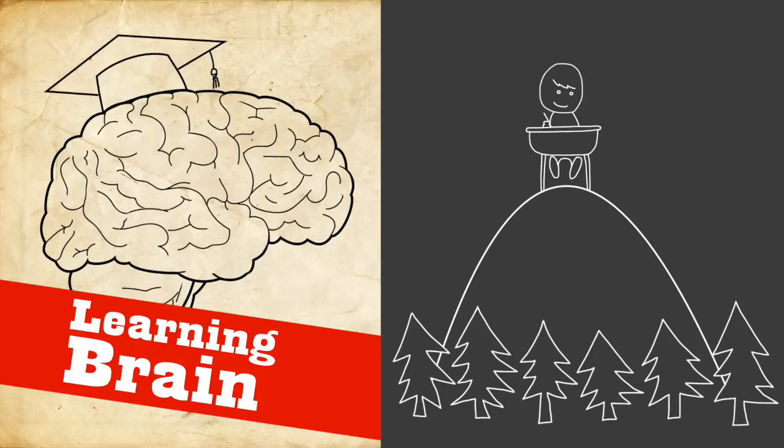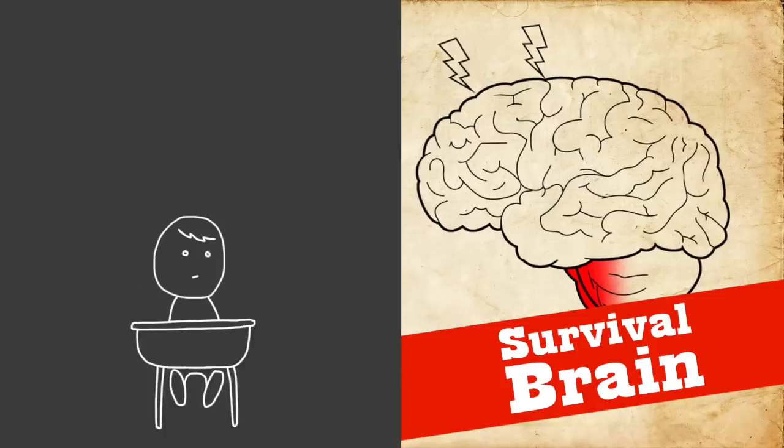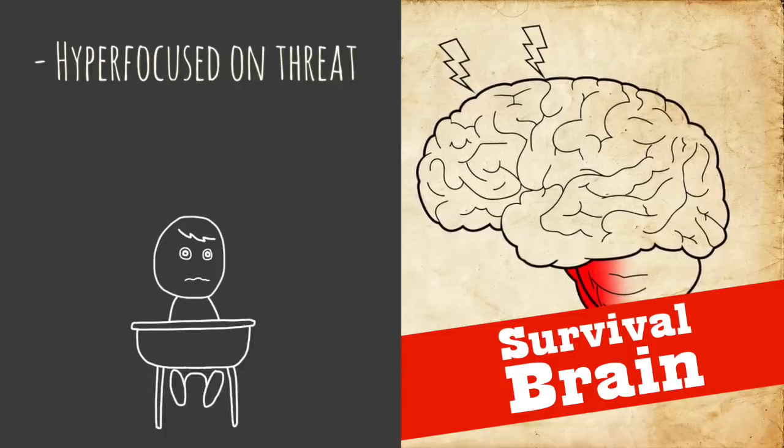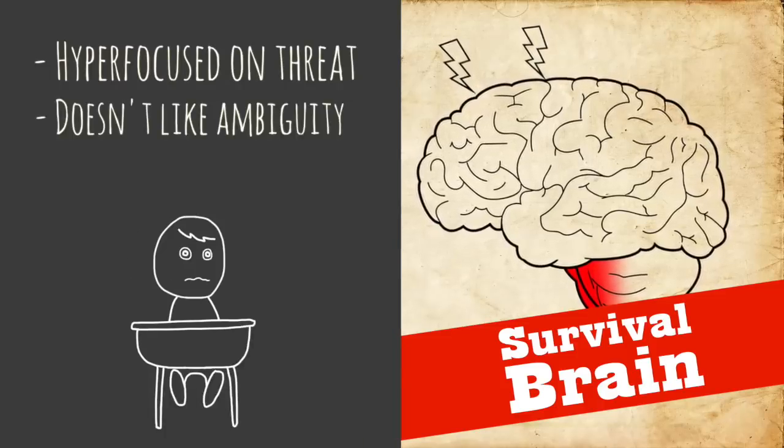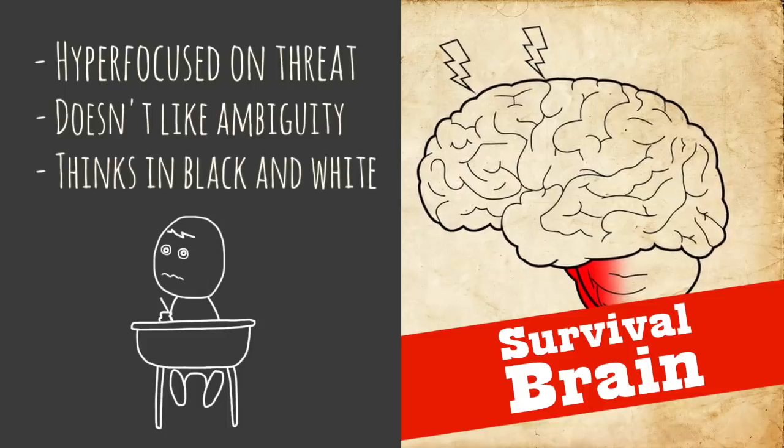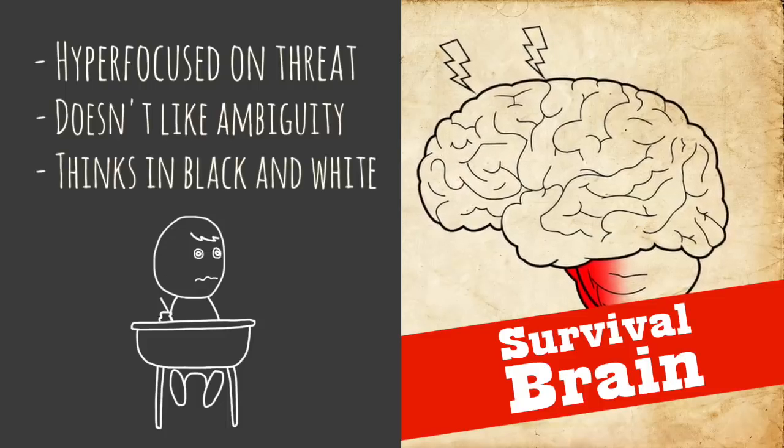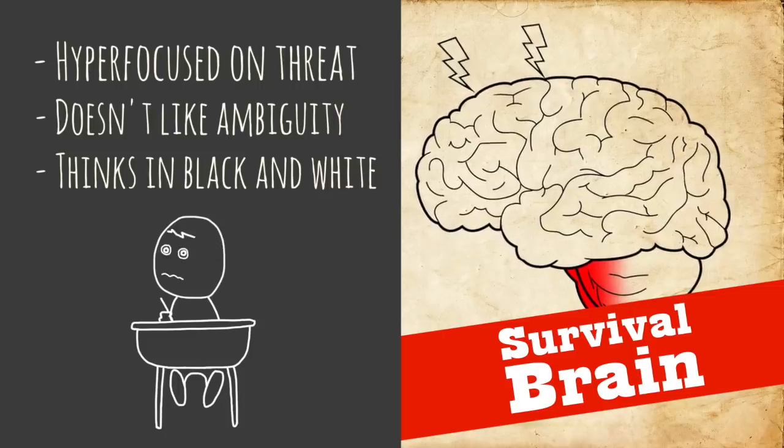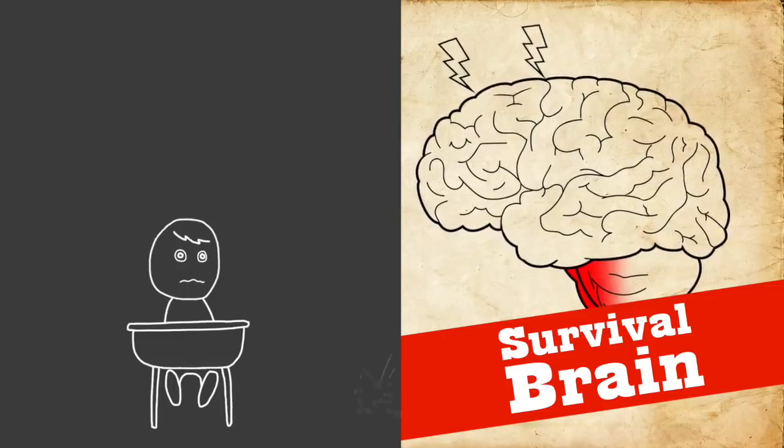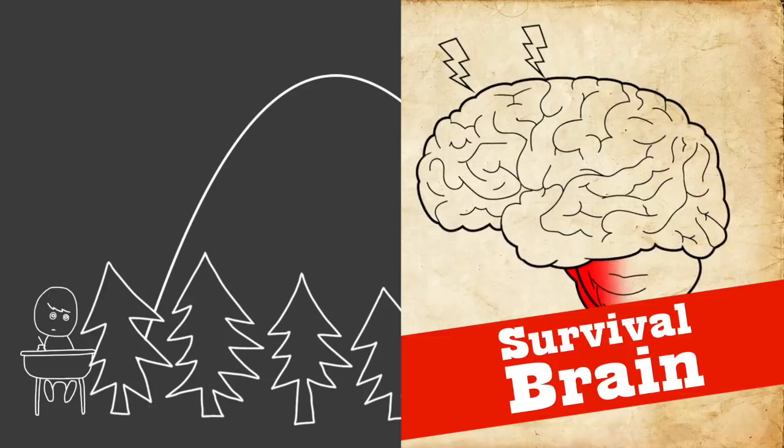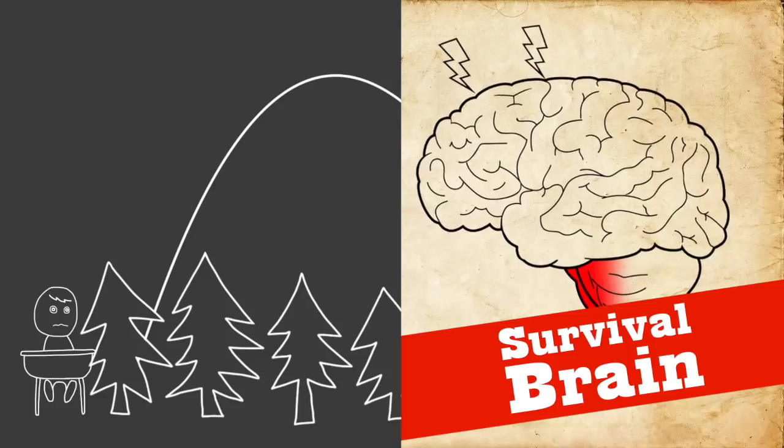Now survival brain on the other hand is completely different. It's hyper-focused on threat. It doesn't like ambiguity. It wants clear hard facts. It thinks in black and white terms. It doesn't want anything to be gray at all. And then emotionally, you can imagine that survival brain makes people feel panicky, feel a little obsessive and afraid of getting things wrong. And they don't feel calm and open to learning new things. They just want to get things over with.